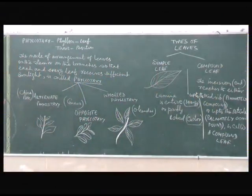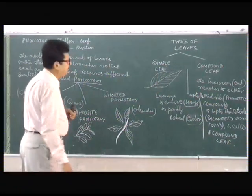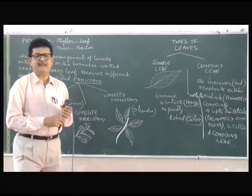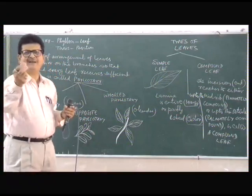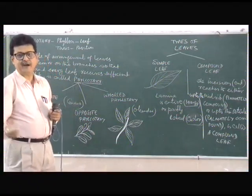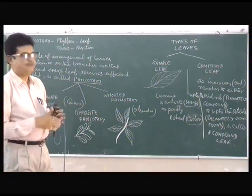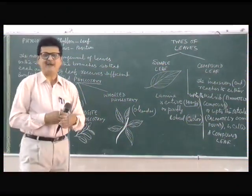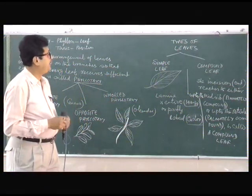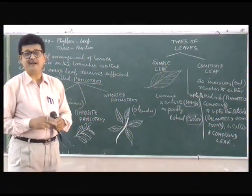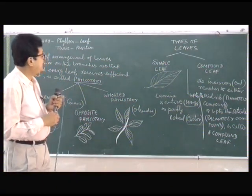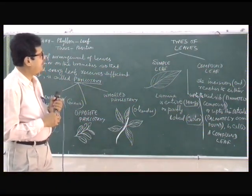So leaves are of two types: simple leaf and compound leaf. A simple leaf has an entire lamina. There may be a partly lobed condition, as in papaya and castor. Otherwise, it is an entire lamina as in mango, where the lamina is not incised at all. So these are the two types of leaves — simple and compound.